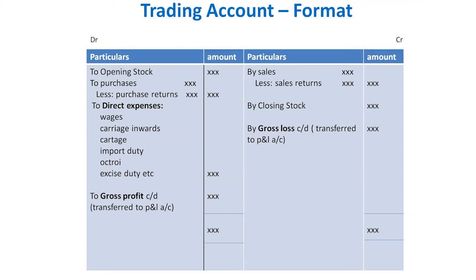In the trading account, you will compulsorily get five important transactions: the first is opening stock, the second is purchases, the third is sales, the fourth is closing stock, and the fifth is direct expenses.